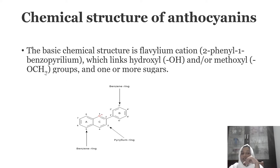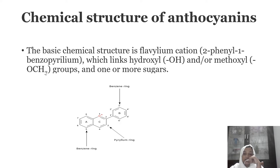Next is structure. The chemical structure of anthocyanins — basic structure. The chemical structure is based on the flavylium cation, also known as 2-phenylbenzopyrylium.